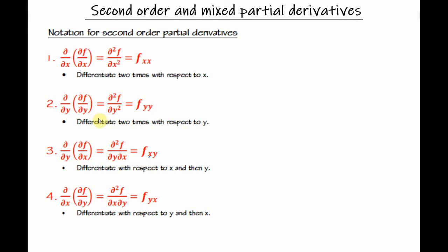Now about the notation. The notation of the second order partial derivatives is very important, so let's take a look at them. The second order partial derivative of the function with respect to x means we differentiate two times with respect to x. Similarly, the notation for y tells us to find the partial derivative with respect to y two times.